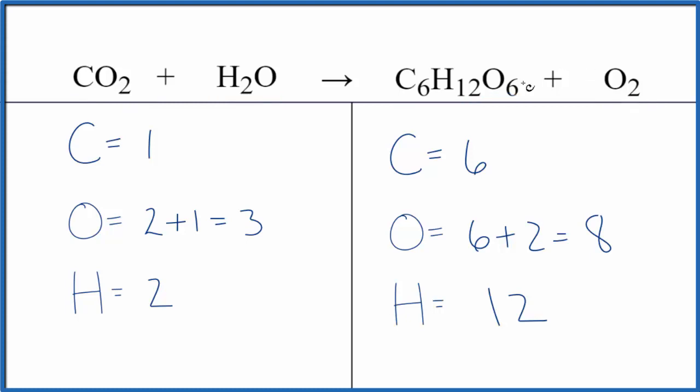I've already counted the atoms up. The thing to be careful here is we have two oxygens here and just one here. So two plus one, that gives us three. Product side, we have six oxygens here and two here. So six plus two, that gives us eight. Make sure you count those up correctly.